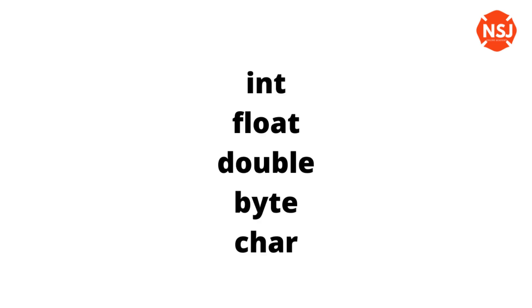In primitive data types, we have int, float, double, char, and byte. These are the primitive data types used in functional-oriented programming and C/C++. In Java, we have int, float, double, char, and byte as primitive data types.